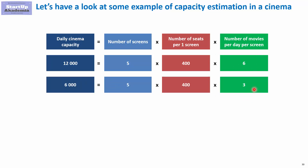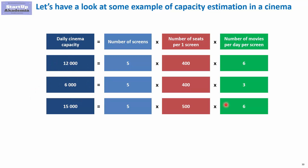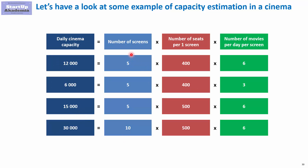If we have a longer movie — for example Avengers Endgame — the number of movies per day drops from six to three, and our capacity goes down from 12,000 to 6,000. Another example: if we put smaller chairs so the average seats per screen goes from 400 to 500, our daily capacity goes up from 12,000 to 15,000. And if we expand the cinema by adding five new screens, we can double the capacity from 15,000 to 30,000. That's, in short, the main terms we will be using — we'll discuss them further during the course when solving specific case studies.